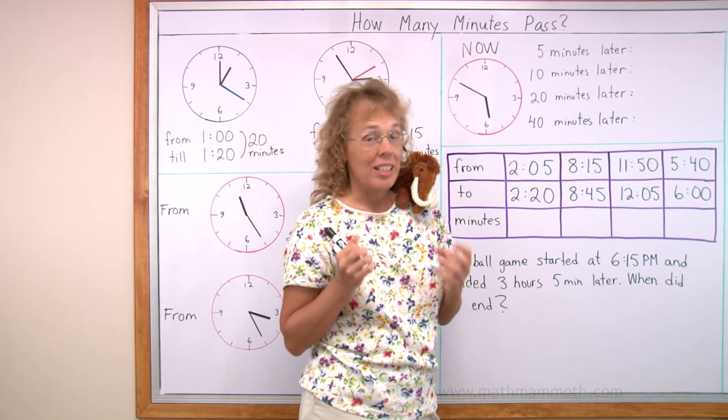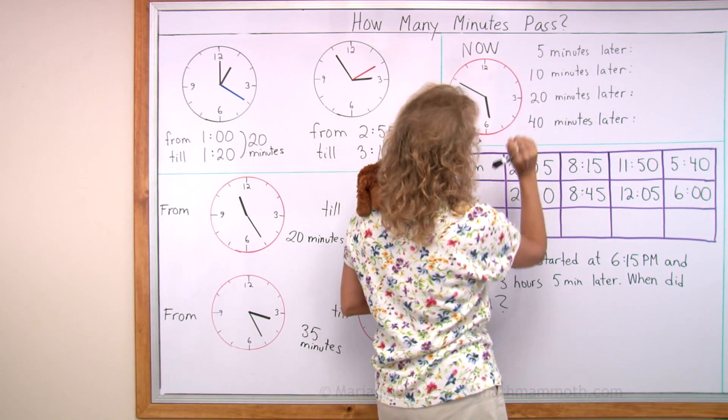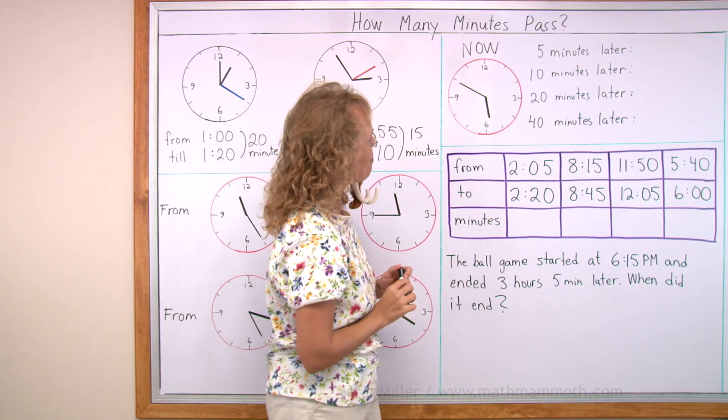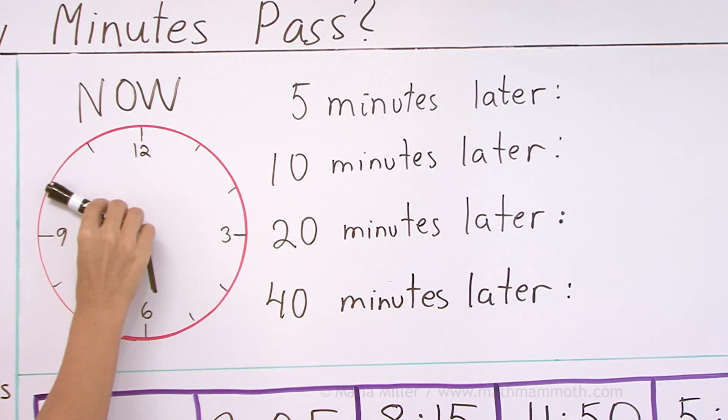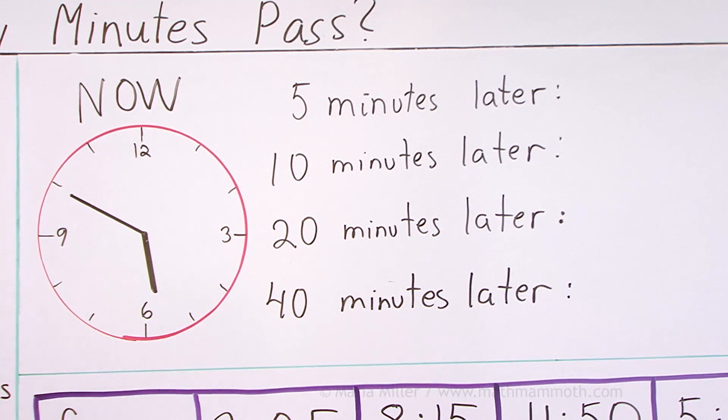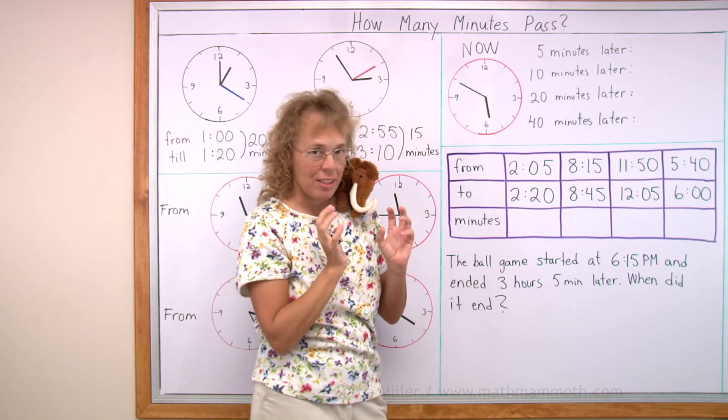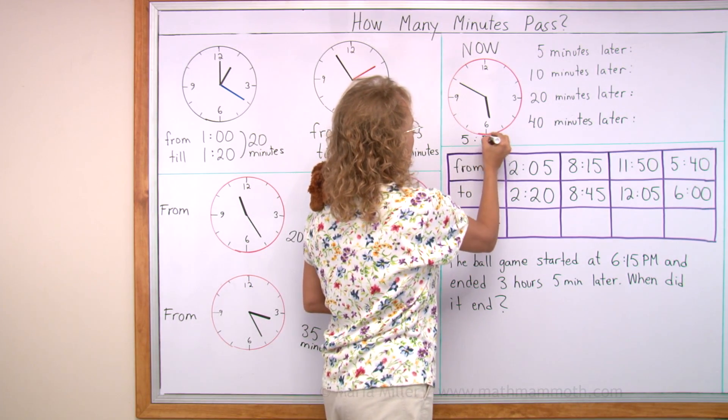This clock shows us the time now. Our task is to write the time 5 minutes later and 10 minutes later, 20 and 40 minutes later. What time is it now? It would be 10 minutes till 6. Or if we say it using the hours and minutes way, we would say 5 hours and 50 minutes, right? 5:50.